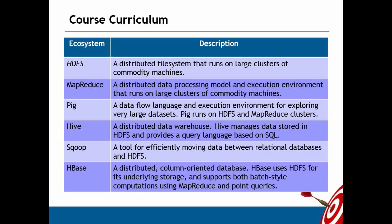PIG is a data flow language — one command's output is taken as input to the next command, implementing a data flow using a language called PIG Latin. Non-programmers can use PIG with a minimum learning curve of four to five days. Whatever Big Data analysis you can do using MapReduce in a programming language, you can implement the same using PIG scripting. PIG is a replacement for MapReduce for processing all types of data — structured, semi-structured, and unstructured.